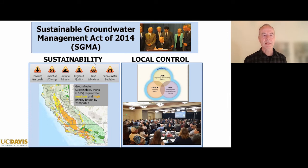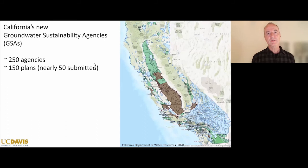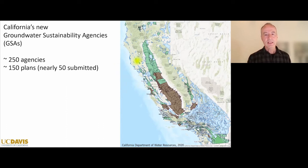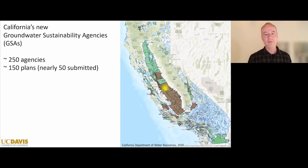Following the passage of that law, we have established about 250 new agencies now responsible for managing groundwater. There are about 150 groundwater sustainability plans in progress, of which 50 have been completed and submitted to the state agency responsible for overseeing them. The green areas on the map are all areas either planning to have or that have already submitted groundwater sustainability plans — clustered in the parts of the state most severely impacted by groundwater overdraft.